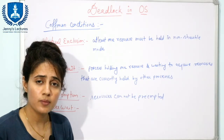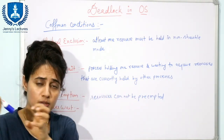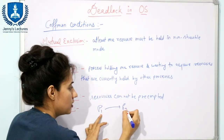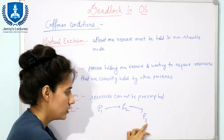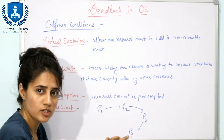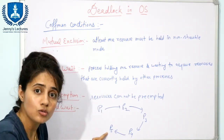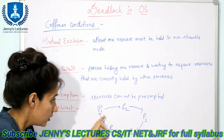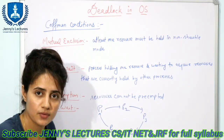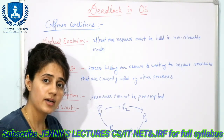The fourth condition is circular wait: processes are waiting in a circular chain. For example, P1 is waiting for a resource held by P2, P2 is waiting for a resource held by P3, P3 is waiting for a resource held by P4, P4 is waiting for a resource held by P5, and P5 is waiting for a resource held by P1. This forms a circular wait. All four conditions must hold simultaneously for deadlock to occur.